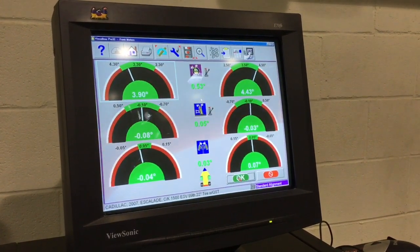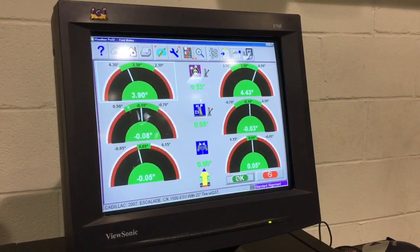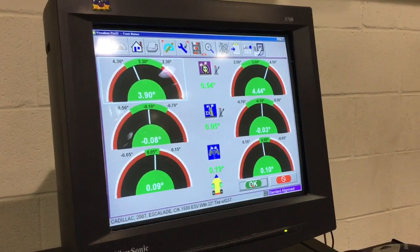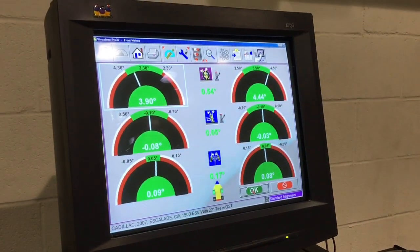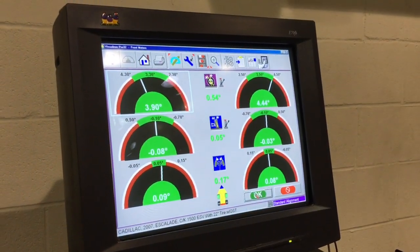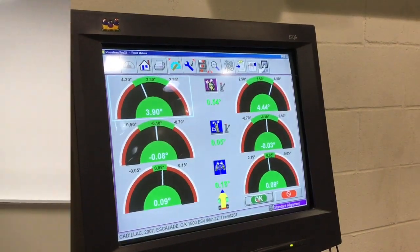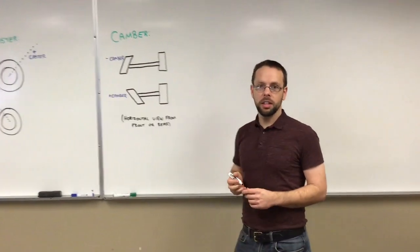We can see Rob adjusting the toe, trying to get it into spec. He's going to try and get the total toe as close as possible. Looking at the screen, you can see I've done some fine adjustments on the left toe. Now this alignment is ready for the printer so it can go into the customer's file for their vehicle.